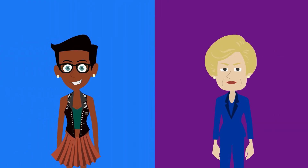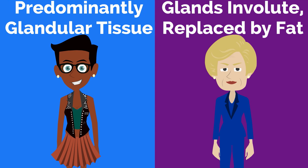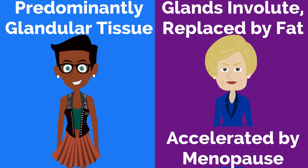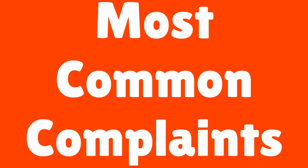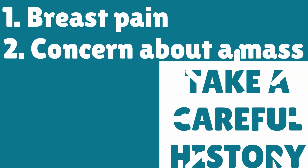In young women, the breast consists predominantly of glandular tissue. With age, the glands involute and are replaced by fat, and this process is accelerated by menopause. The two most common complaints related to breasts are: 1, pain, and 2, concern about a mass. It is important to take a careful history.